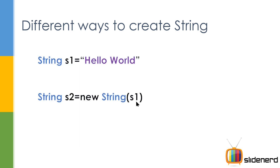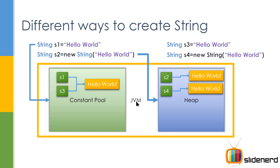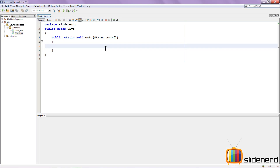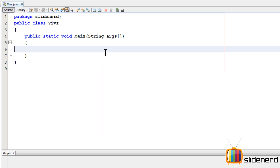So as I said, String S1 = "hello world", and String S2 = new String(S1) — this is one of the ways to create a string; you can create a new string from an existing string. Now let me go to NetBeans and actually demonstrate that what I said about heap and the constant pool is true.